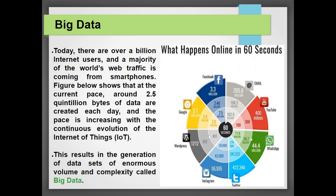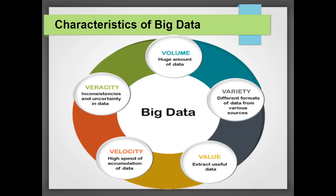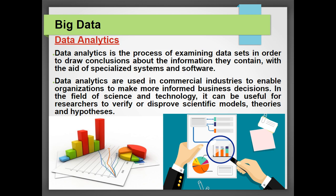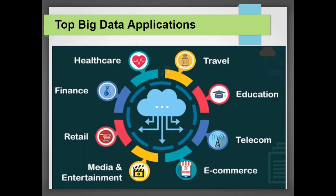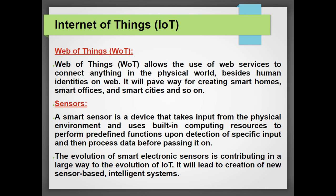We also learned about the Internet of Things, where we store big data. The characteristics of big data include volume — we can store more data and then extract only the useful data — high speed of data storage, and varieties of data can be stored. There is also something called the Web of Things, which allows the use of web services to connect anything in the physical world on the web. It helps in creating smart homes, smart offices, and smart cities. Internet-based services that provide better living are known as the Web of Things.